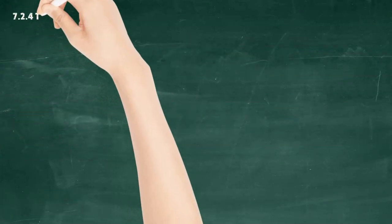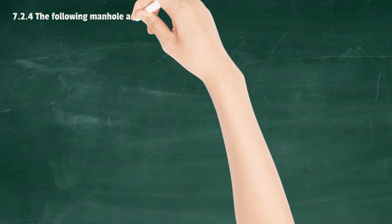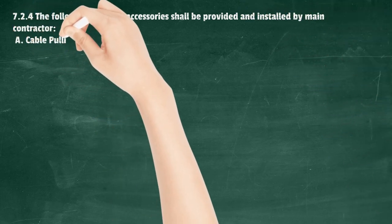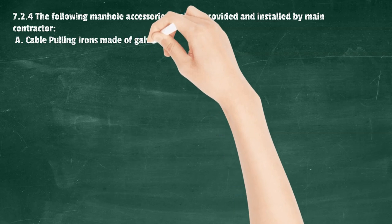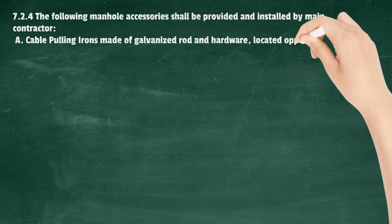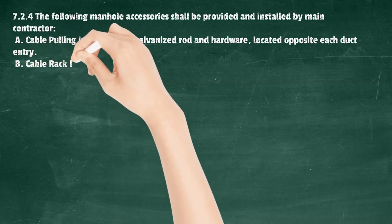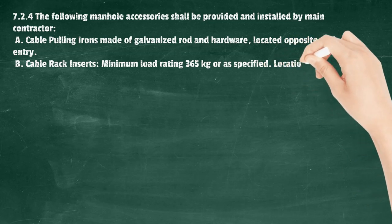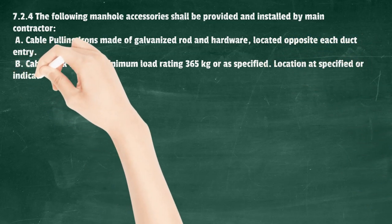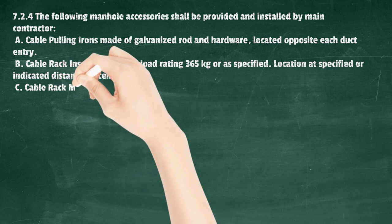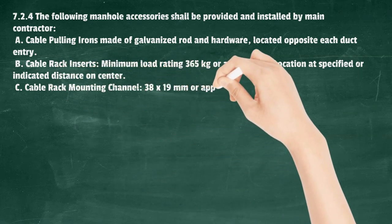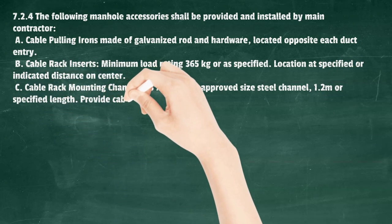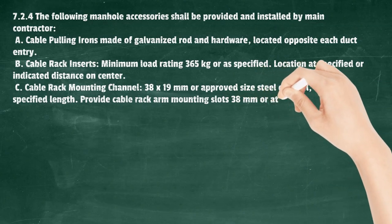Duct bank excavation shall be coordinated with the main contractor. The following manhole accessories shall be provided and installed by the main contractor: A) Cable pulling irons made of galvanized rod and hardware, located opposite each duct entry. B) Cable rack inserts, minimum load rating 365 kg or as specified, located at specified or indicated distance on center. C) Cable rack mounting channel, 38 x 19 mm or approved size steel channel, 1.2 m or specified length, with cable rack arm mounting slots at 38 mm or standard centers.